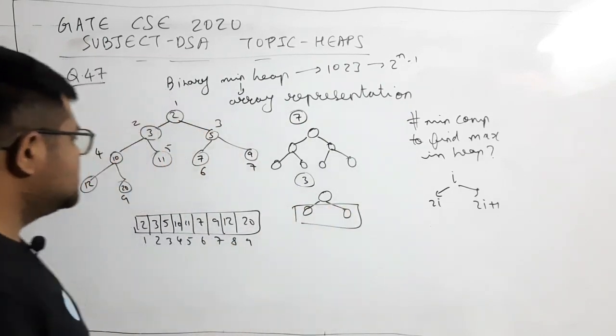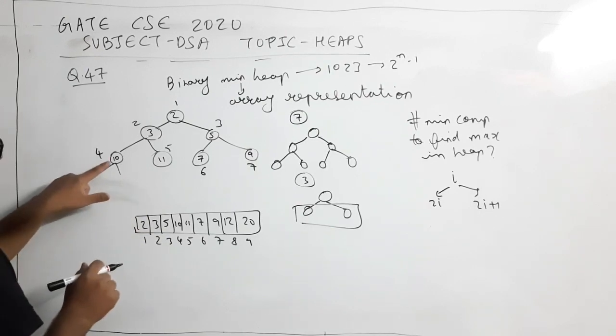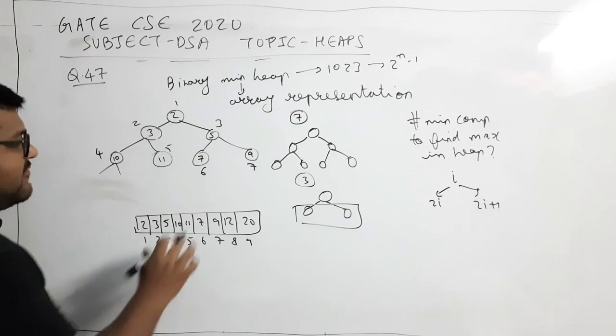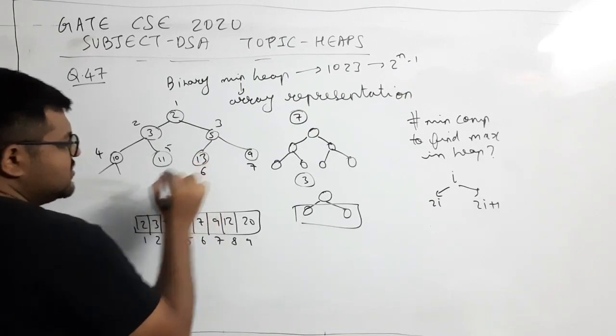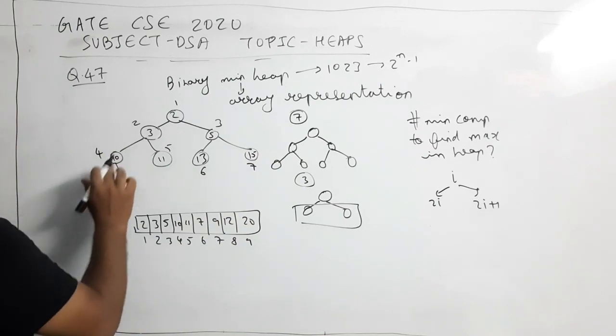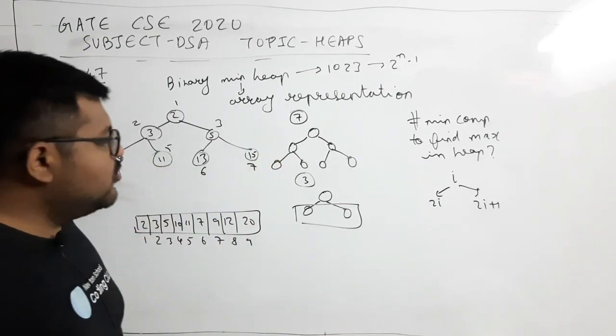So in 3, how many leaf nodes are there? Where can the maximum value be? Look, if I remove these two, then maximum value can also be here at 10. Maximum value can also be here at 13. This is also valid. It can also be here at 15. This is also valid. It can also be here. This is also valid. So it can be in any leaf node.